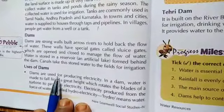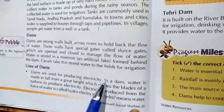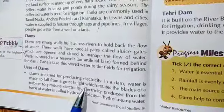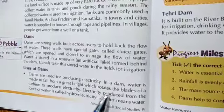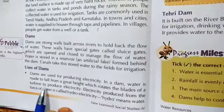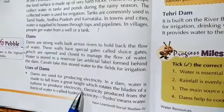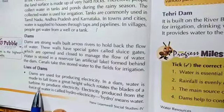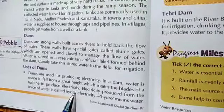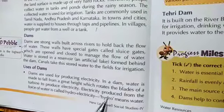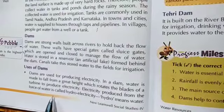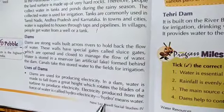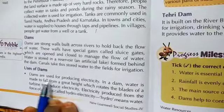Uses of dams: Dams are used for producing electricity. In a dam, water is made to fall from a great height, which rotates the blades of a turbine to produce electricity. Electricity produced from the force of water is called hydroelectricity. Hydro means water.